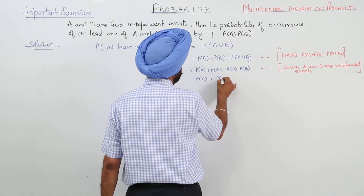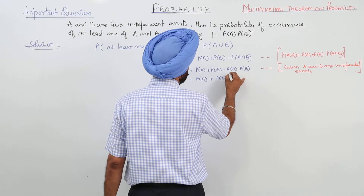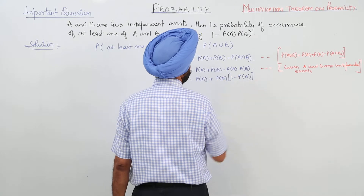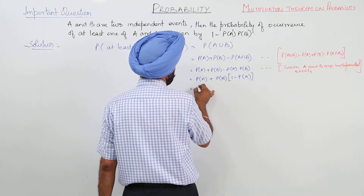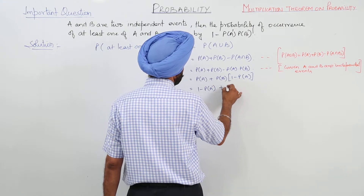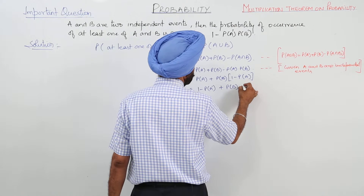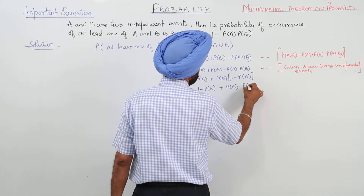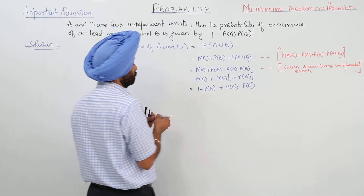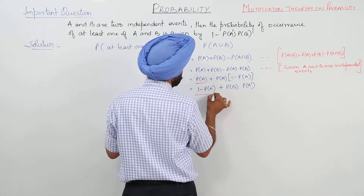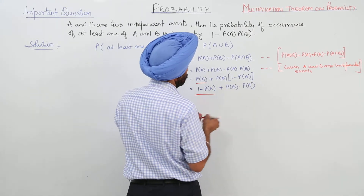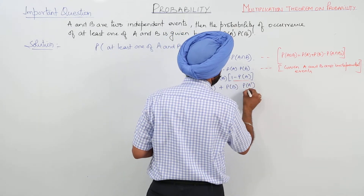Taking P(B) common from these two terms, we get P(B) times (1 minus P(A)). Now writing 1 minus P(A) as P(A') and rearranging, we get 1 minus P(A') plus P(B) times P(A'). To P(A) we have written this thing, and to this we have written this.